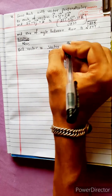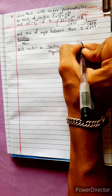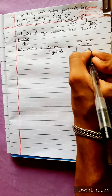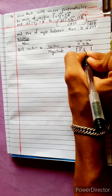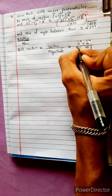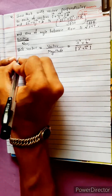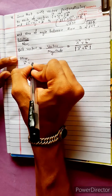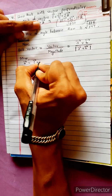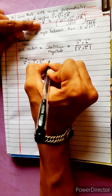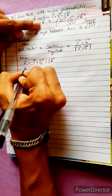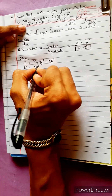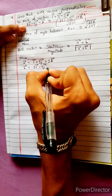Unit vector is equal to vector. Now, unit vector is equal to minus vector. The first vector is i plus 3j plus 2k, and the second vector is 2i minus 4j plus k.